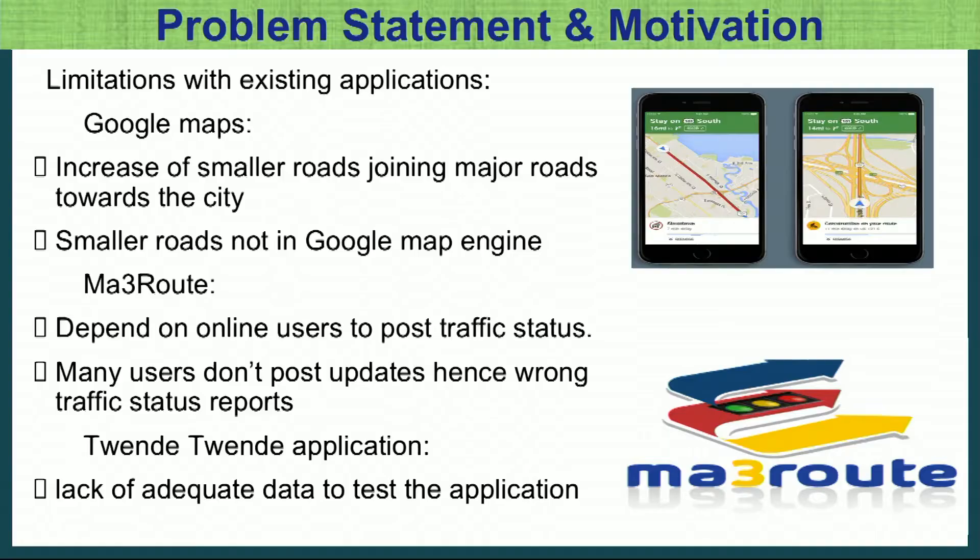We also have a local app called Matri. This app works by allowing all drivers online to post the condition of traffic on the roads, so other users can check the app and see how congested roads are. But there is a problem with this app because not every driver is online. With so few drivers participating, there is not enough data to make reliable predictions.